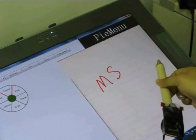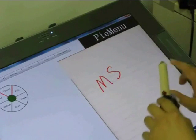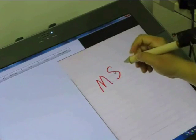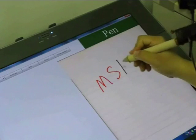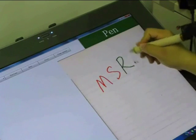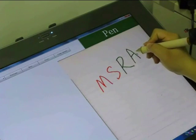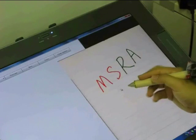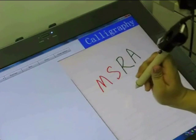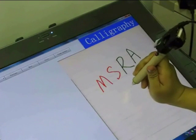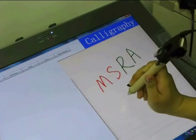I can use a special grip to trigger a pie menu to choose a color. And then I'm going to write some Chinese characters using a special Chinese calligraphy brush, using the special grip of the Chinese brush.